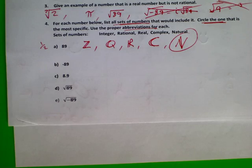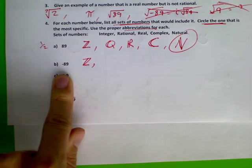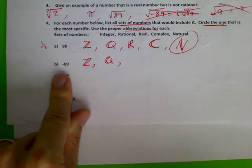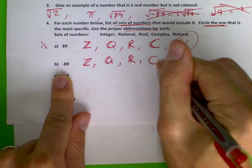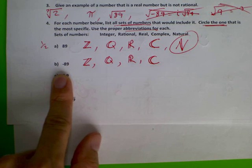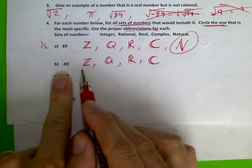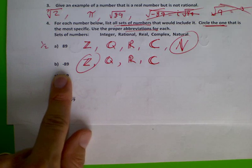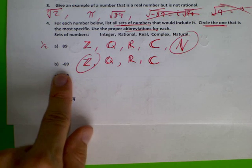What about negative 89? Is it an integer? Yes. Rational? Sure — negative 89 over 1. Real? Yes, it's not imaginary. Complex? Yes, always. Natural number? You wouldn't count to negative 89 on your fingers. The most specific and best name for negative 89 is integer.